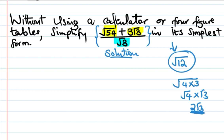Coming back to our problem: 54. We need to break that 54 down to find a square number inside it. So what we normally do is look for square numbers. We're looking at 54, and I'm putting here 54.